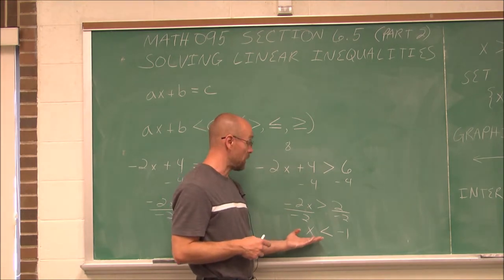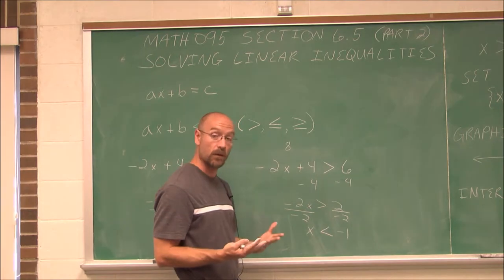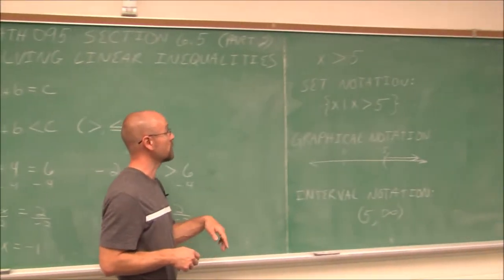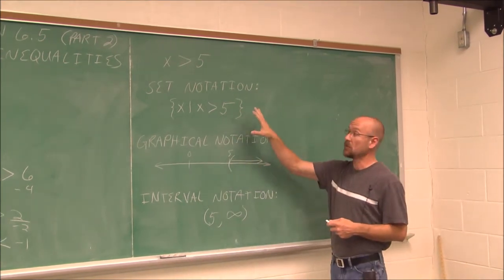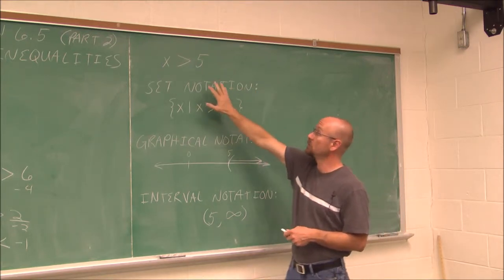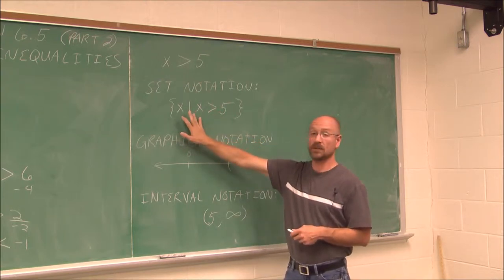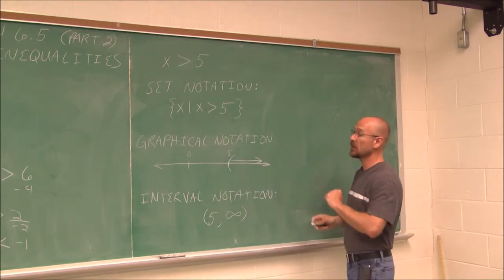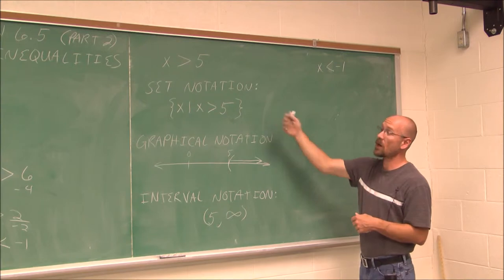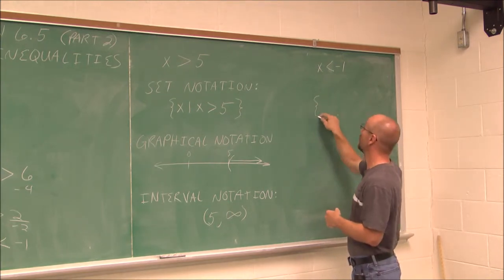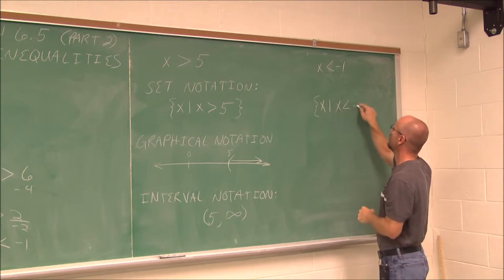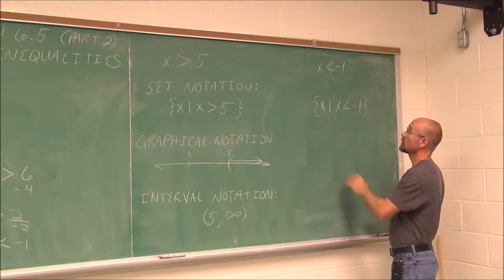In the previous video we talked about writing answers in set notation, graphical notation, and interval notation. This here is called algebraic notation. Let's look at the example x is greater than 5 from Part 1's video. Set notation takes this value and gives it braces with x such that: x such that x is greater than 5. We can do the same with x is less than negative 1 — using a brace with x such that x is less than negative 1, then close the brace. Now we have it in set notation.